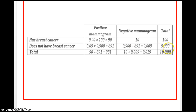For those without breast cancer, the mammogram comes back positive 9% of the time, so 0.09 times 9,900 equals 891. And 9,900 minus 891 gives us 9,009 for negative mammogram among those without breast cancer. Now we can add the columns and we have all of our figures.